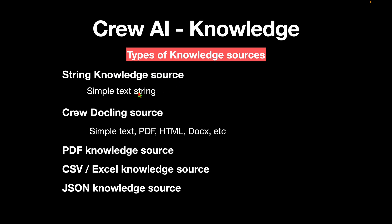There can be different types of knowledge sources. For example, there can be string knowledge where your input is pure string or text. Or it could be a CrewDocLink source, which could be in the form of PDF, HTML, DOCX, or a document. We also have a PDF knowledge source. On top of that, the knowledge source could be a CSV file, which is more structured, or it could be in the form of a JSON file. We'll look into code samples to find out how we can ingest knowledge into the system or into the agents.